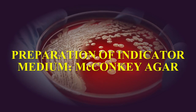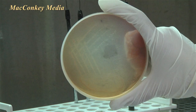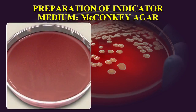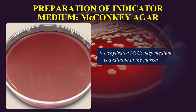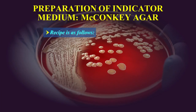Preparation of Indicator medium — McConkey medium: This is a useful medium for the cultivation of enterobacteria. It contains bile salts which inhibit the growth of gram-positive bacteria and promote the growth of only gram-negative bacteria. In addition, it contains a dye called neutral red which gives a pink colour to colonies of lactose-fermenting bacteria. Non-lactose fermenting bacteria, on the other hand, form colourless colonies. Dehydrated McConkey medium is available in the market and should be reconstituted according to the manufacturer's instructions, adhering strictly to all directions for preparation, sterilisation and storage mentioned earlier. However, if you choose to make your own medium, the recipe is as follows.